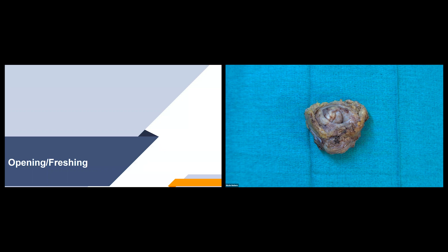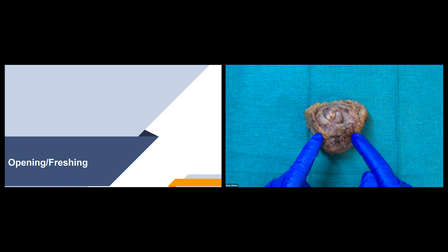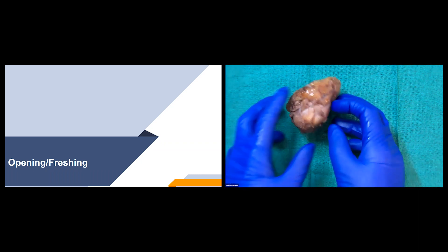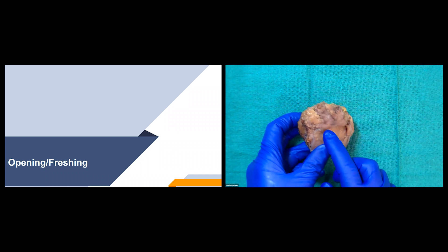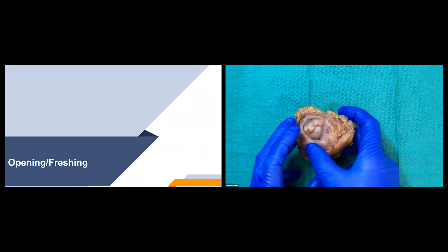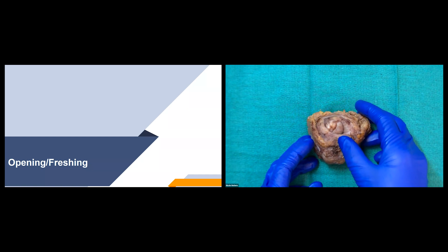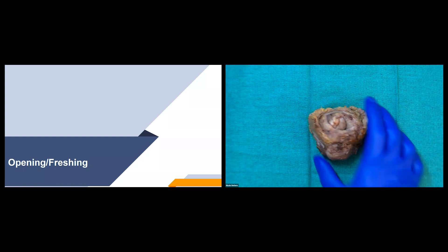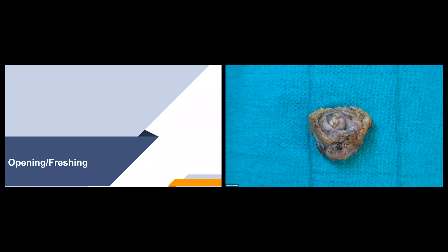Now we'll discuss how we open or fresh these specimens. We first take the weight of the specimen, then inject formalin using a syringe into all four quadrants of the prostate evenly so that the prostate does not get distorted in size. We inject formalin into the prostate parenchyma to allow it to fix before we gross it.